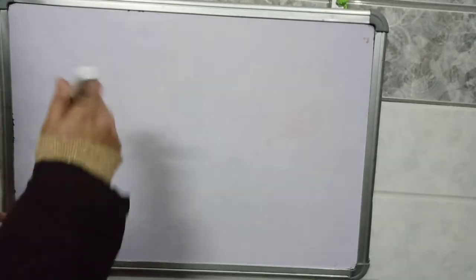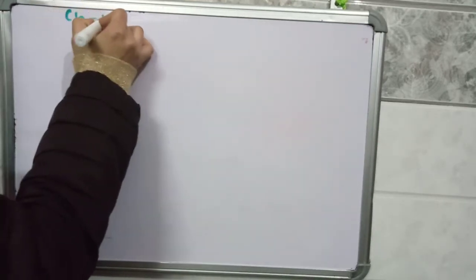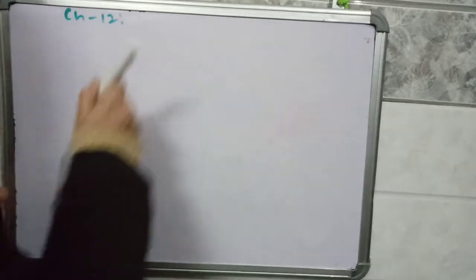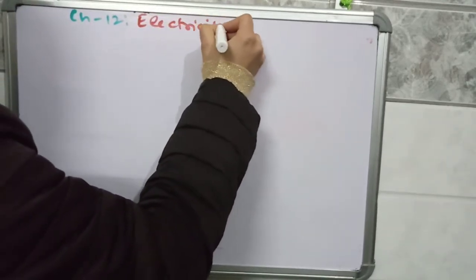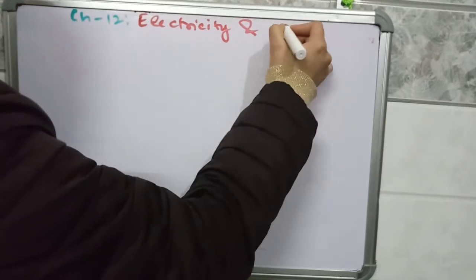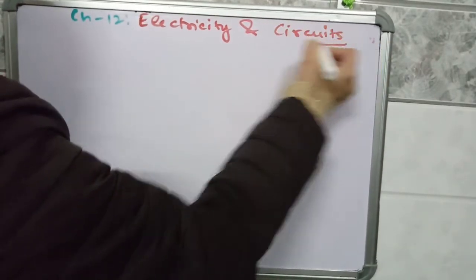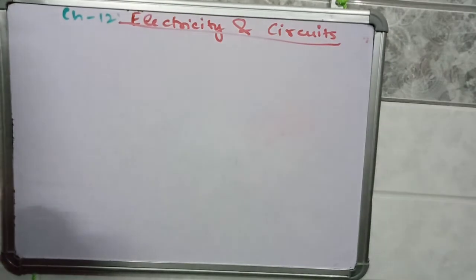Hello students, let's continue our chapter, chapter number 12: Electricity and Circuits. Electricity is a source of energy and it is a form of energy with the help of which various appliances in our home operate.